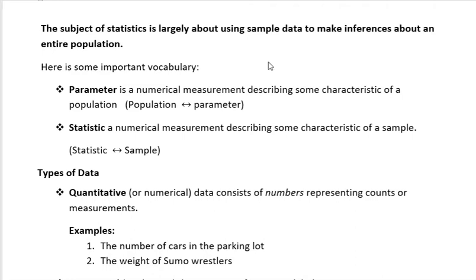Here's some important vocabulary. A parameter is a numerical measurement describing some characteristic of a population. Population and parameter—the two P's might help you remember that.